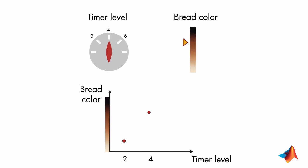And in the last one, your input is 6 and you get a dark brown color. If you now fit a curve through these points, this represents the model of the toaster with the bread at steady state.